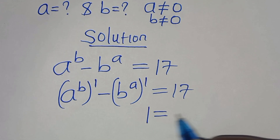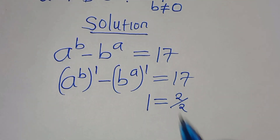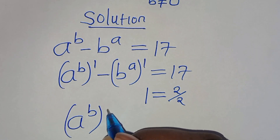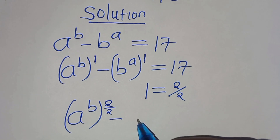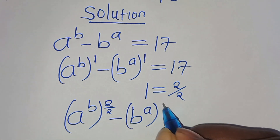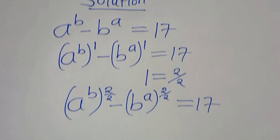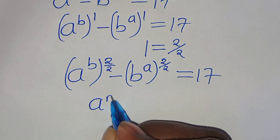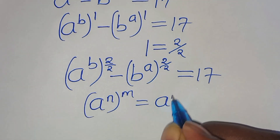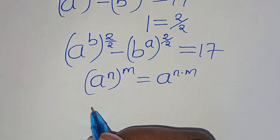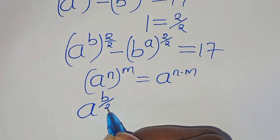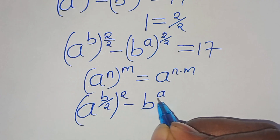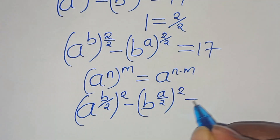The next step is that we can express 1 as 2 over 2. So let's substitute 1 with 2 over 2, so that we have a to the power of b raised to the power of 2 over 2, subtract b to the power of a raised to the power of 2 over 2, equal to 17. Using the rule a^n raised to m equals a^(n times m), this gives us a to the power of b over 2, raised to the power of 2, subtract b raised to the power of a over 2, raised to the power of 2, equal to 17.